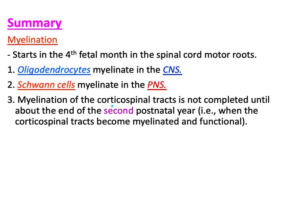The corticospinal tract is a very important tract in the nervous system. Its myelination is not completed until the end of the second postnatal year, because myelination corresponds to functional maturation. This is why a baby cannot walk initially — the brain is still not completely developed.